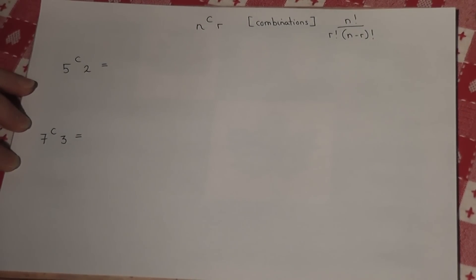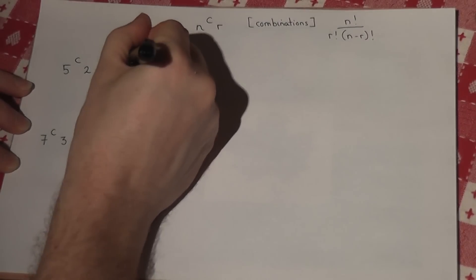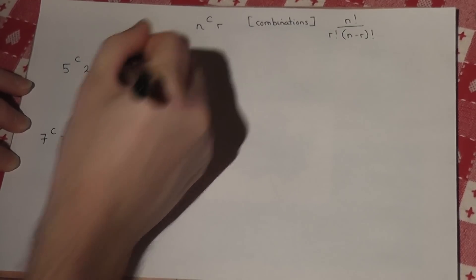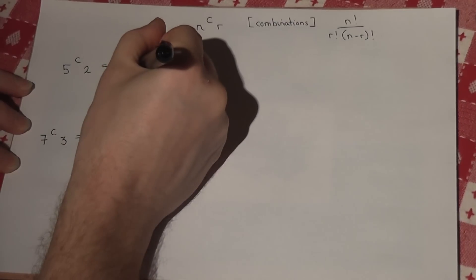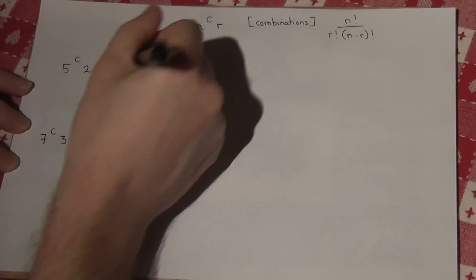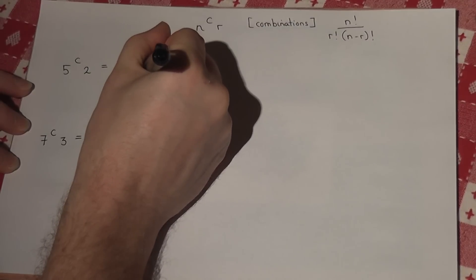Now that looks quite a hefty formula, but it's quite simple when we put it with numbers. So 5C2 means 5 factorial over 2 factorial times by 5 minus 2, which is 3 factorial.